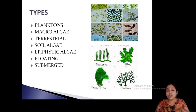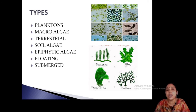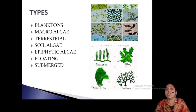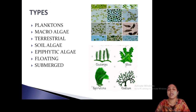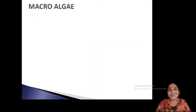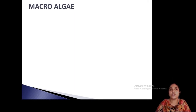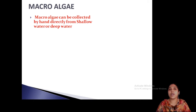In order to collect planktons, you have to adopt one method. In order to collect macroalgae, you have to adopt another method, and for collecting floating algae, yet another method. For each and every type, you have to follow a particular collection method that depends on the particular habitat of the algae. First, we are moving on to discuss the collection methods of macroalgae. What are macroalgae? Macroalgae are algae that we can see with our naked eyes.